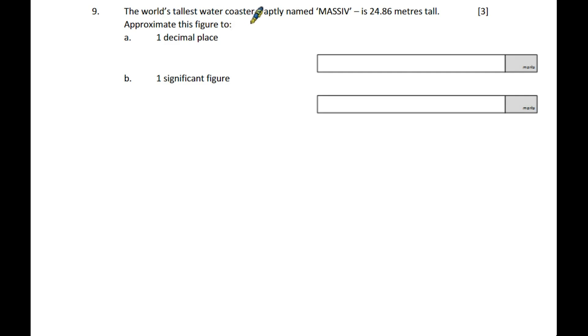Question nine: The world's tallest water coaster is 24.86 meters tall. Approximate to one decimal place: one decimal place is the eight, so we look at the six. It's five or above, rounding the eight up to nine, giving 24.9. Part B is one significant figure. The first significant figure is the two. The next number is four, so it doesn't round up. We're left with 20.